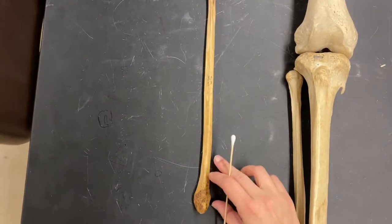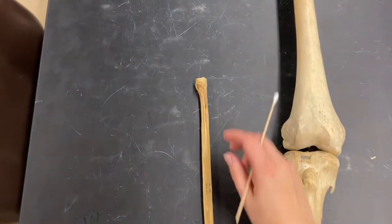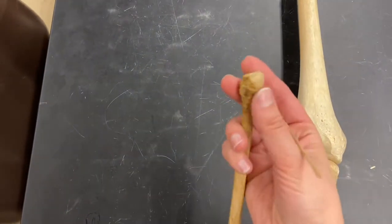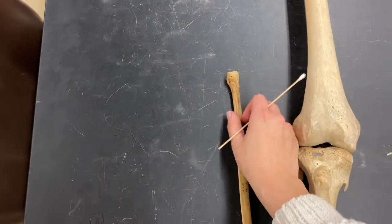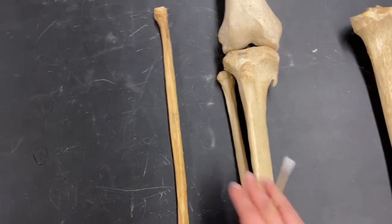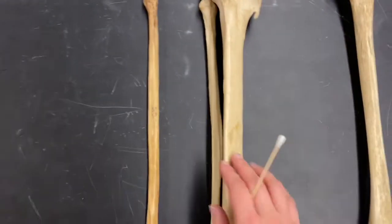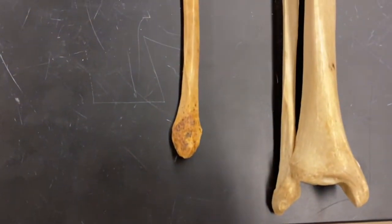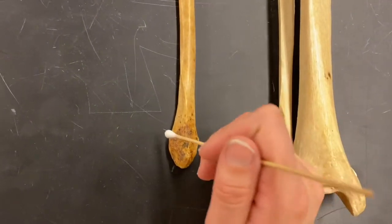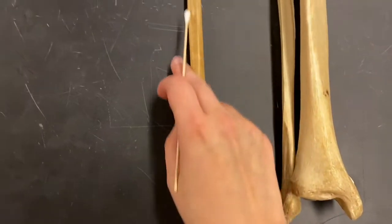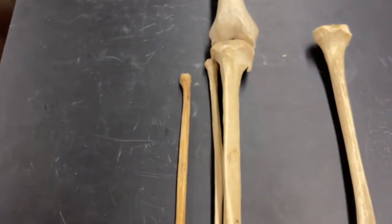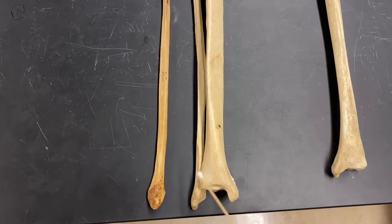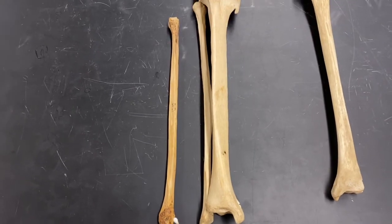From the fibula, locate the flatter portion — this is the head, and it's kind of a thick region. This is the shaft. And then down here, where it narrows and points a little bit, this is going to be called the lateral malleolus, which is easy to remember because if you remember that the fibula is the most lateral bone, then you know that this is, in fact, the lateral malleolus.